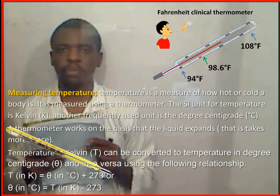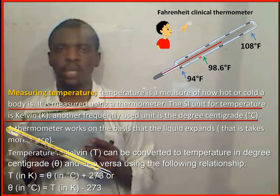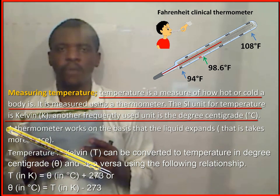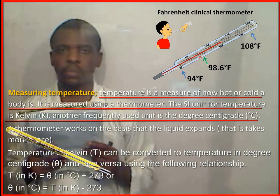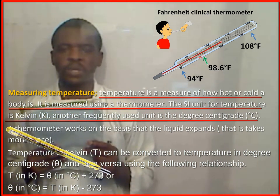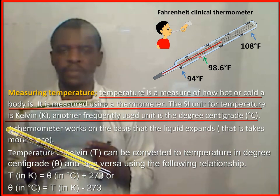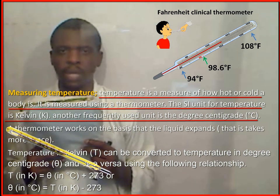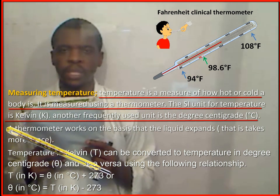Measuring temperature. Temperature is a measure of how hot or cool an object is. It is measured using a thermometer. The SI unit for temperature is Kelvin. Another frequently used unit is degree centigrade.